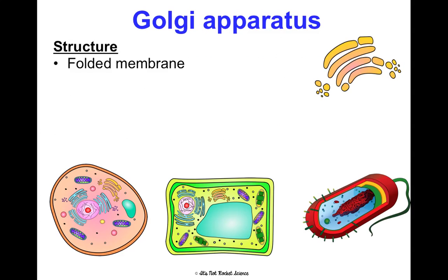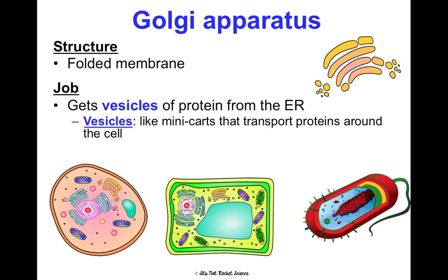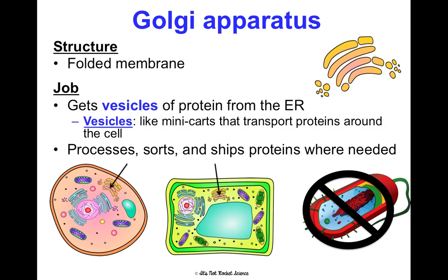The Golgi apparatus is a folded membrane. Its job is to receive vesicles of protein from the ER — vesicles are like mini carts that transport proteins around the cell. The Golgi processes proteins, sorts them, and ships them in vesicles where they need to go, so it's like a packaging center. It's detached from the nucleus and is not in prokaryotic cells.